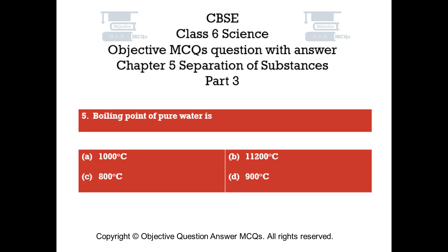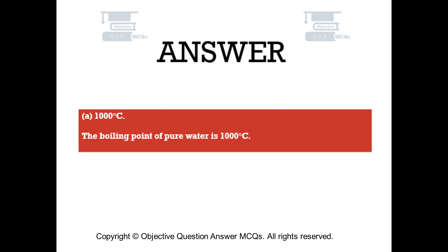Question number 5. Boiling point of pure water is. Option A: 100 degree Celsius. Option B: 112 degree Celsius. Option C: 80 degree Celsius. Option D: 90 degree Celsius. The right answer is Option A — 100 degree Celsius. The boiling point of pure water is 100 degree Celsius.